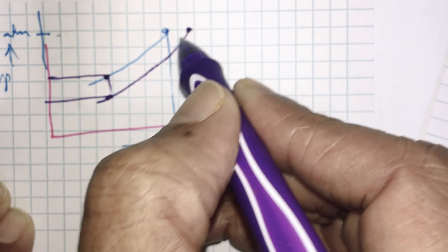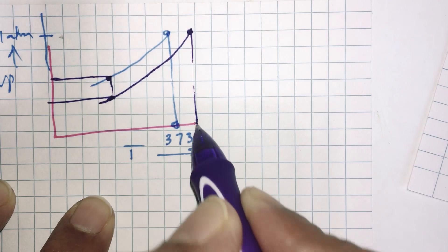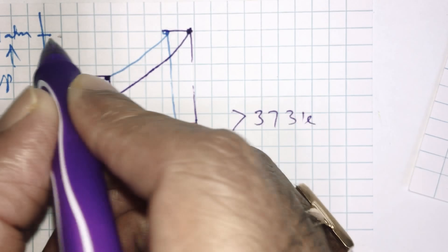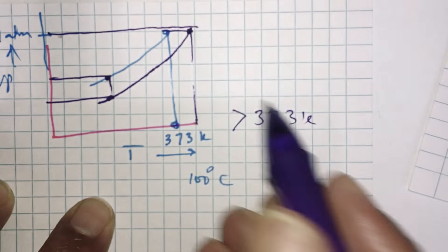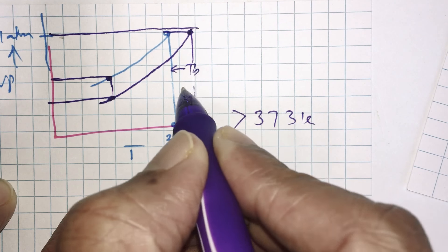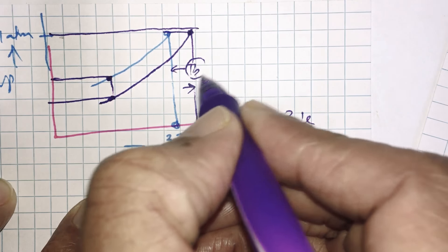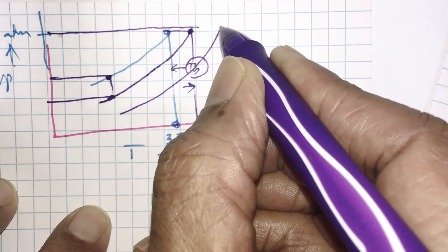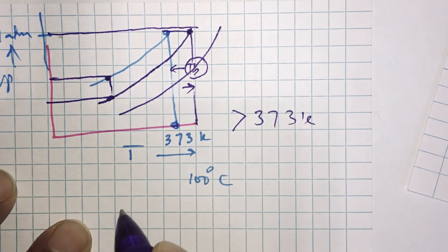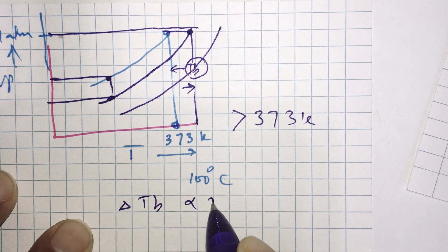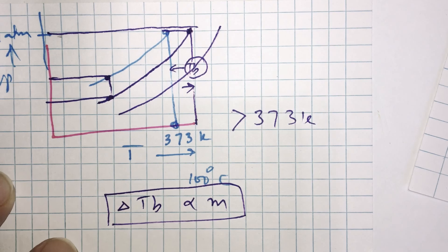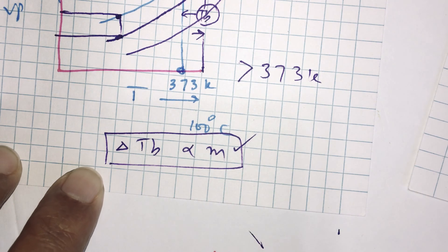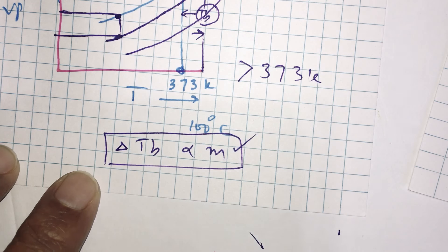Due to this fact, it requires a slightly higher temperature — more than 373 K — to achieve one atmosphere pressure. Therefore, the boiling point of the liquid is said to increase by this amount. From the study of these graphs, this increment in boiling point can be understood to depend on the concentration of solute, which is the molality of the solution. More moles of solute dissolved means more molality, and more elevation in boiling point.